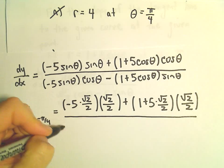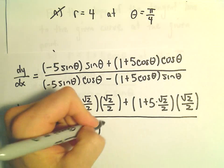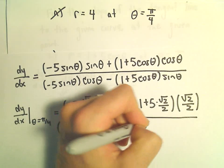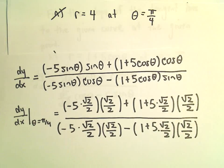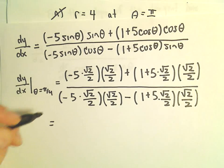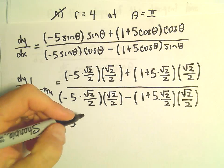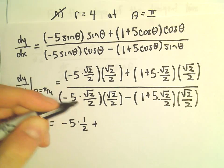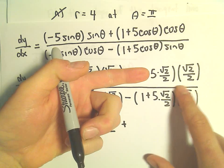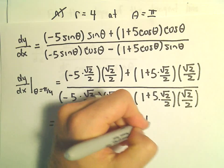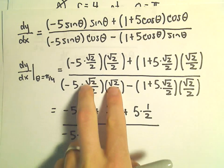There are lots of square roots of 2 over 2 here. In the denominator we get negative 5 times square root of 2 over 2, times cosine of pi over 4, which is square root of 2 over 2, minus 1 plus 5 times square root of 2 over 2, multiplied by square root of 2 over 2. Now it's just a matter of cleaning this up. Square root of 2 times square root of 2 is 2, giving a 4 in the denominator, so 2 over 4 is just one half. Distributing gives square root of 2 over 2 plus 5 times one half, and in the denominator negative 5 times one half when we multiply and simplify.